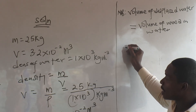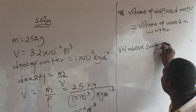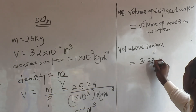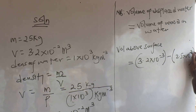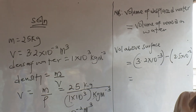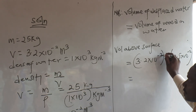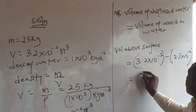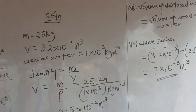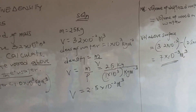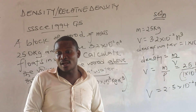The volume above the surface of the water is 7 times 10 to the power minus 3 cubic meters. That is the final answer, and that is the end of the topic on density and relative density. Don't forget to subscribe to our channel and thank you for watching.